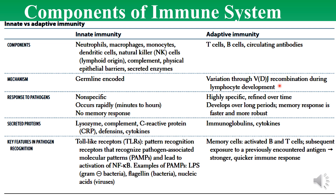This we can discuss in future lectures. In innate immunity, the response to a pathogen is non-specific, occurs rapidly within minutes to hours, and there is no memory response. In adaptive immunity, it is highly specific, gets better and refines over time, develops over long periods, and the memory response is faster and more robust. Secretory proteins in innate immunity include lysozyme, complement, C-reactive protein, defensins, and cytokines. Secreted proteins in adaptive immunity include immunoglobulins and cytokines.